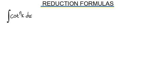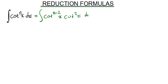We are going to look at how we can determine the reduction formula that involves the function of cotangent. We can relate this in the form cotangent^(n-2)(x) multiplied by cotangent²(x) dx.